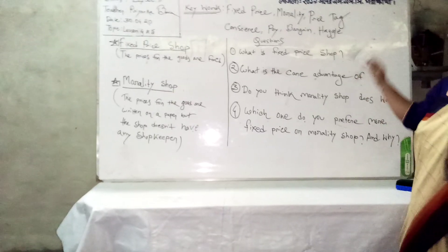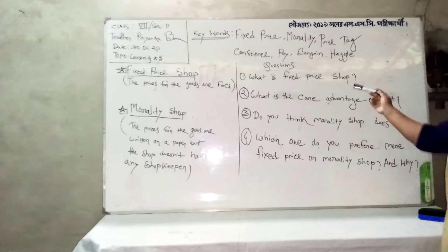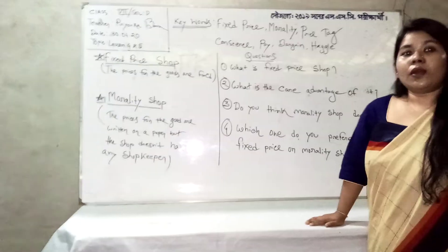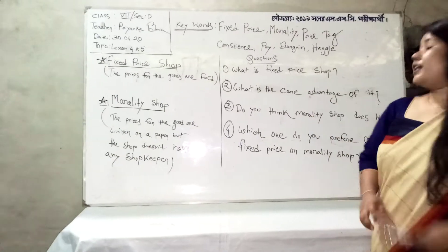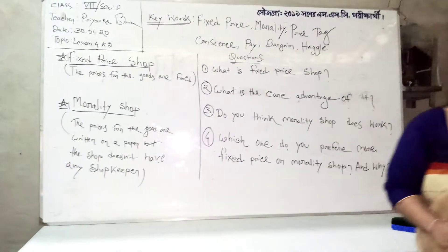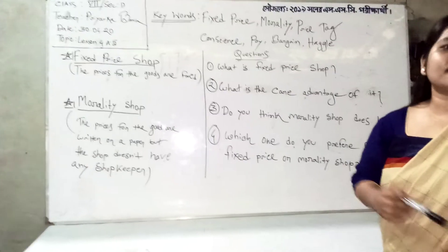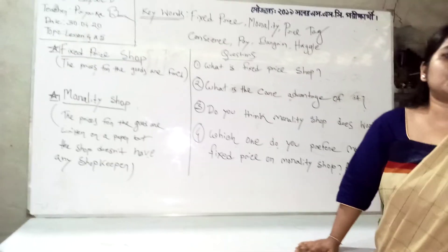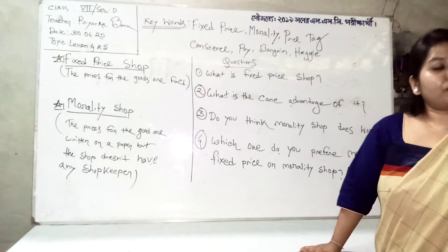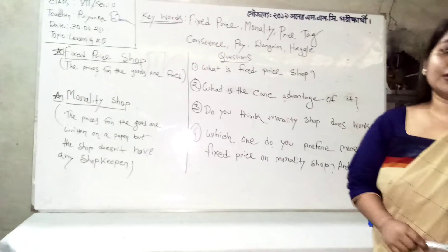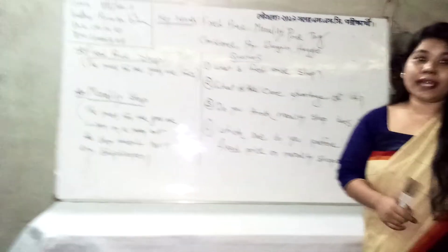Following these two passages, I have prepared some questions. The first: what is a fixed price shop? It is a kind of shop where the prices of the goods are already fixed. The core advantage is that you don't need to bargain — you just pay the fixed price according to the product's value. The third question: do you think the morality shop works? If yes, why? If no, why not?